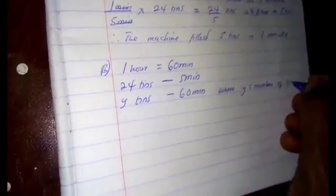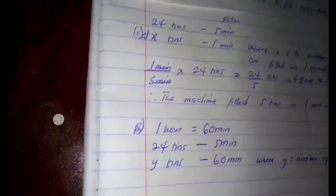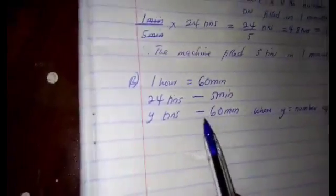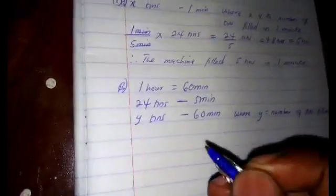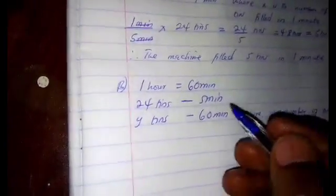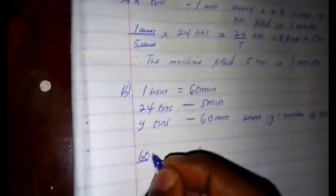Same approach: if less, more divide; if more, less divide. The machine uses 5 minutes to fill 24 tins. Using 60 minutes, will it be more than 24 or less? That's more than 24. So if more, less divide. Looking at 5 and 60, which one is less? 5. So 60 minutes over 5 minutes times 24 tins.